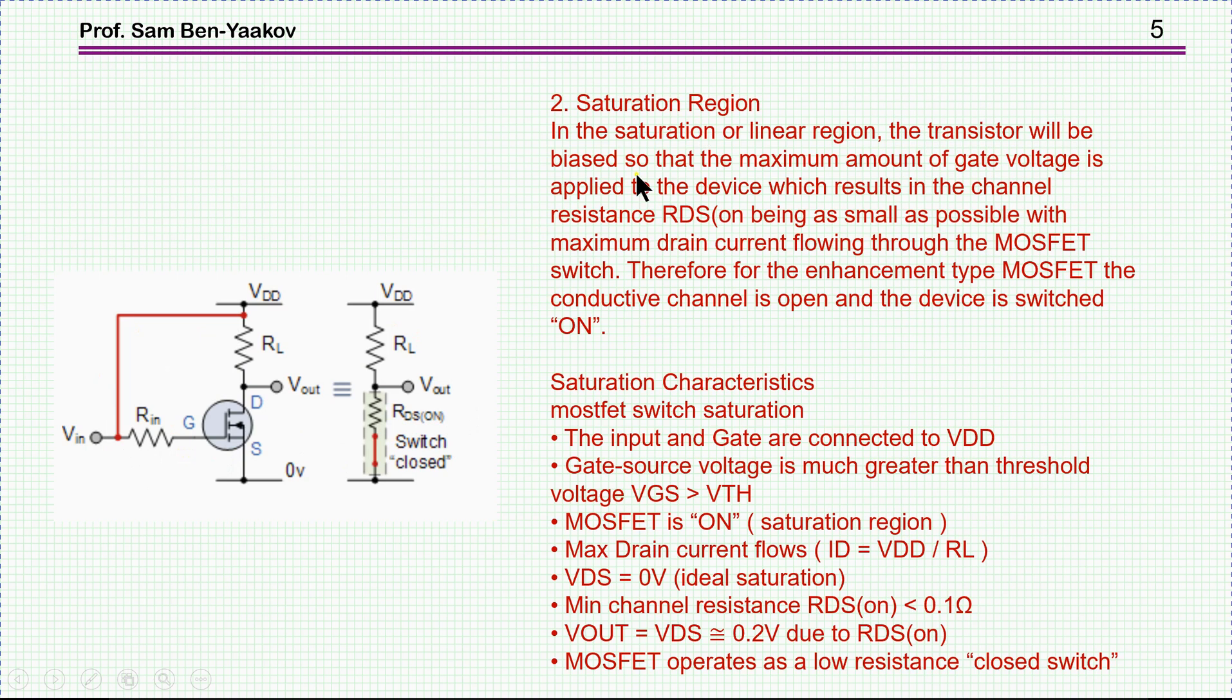In the saturation or linear region, the transistor will be biased so that the maximum amount of gate voltage is applied to the device, which results in the channel resistance RDS on being as small as possible with maximum drain current flowing through the MOSFET.